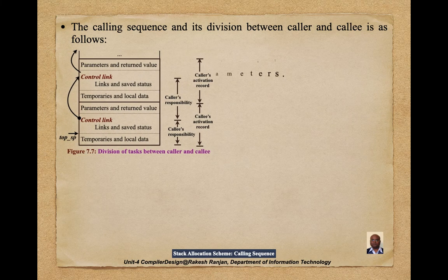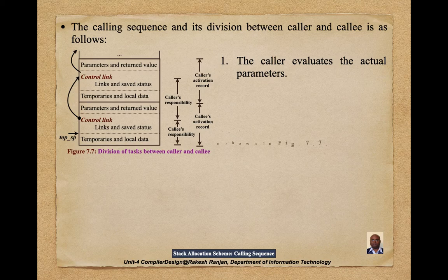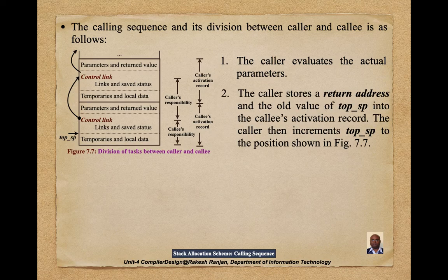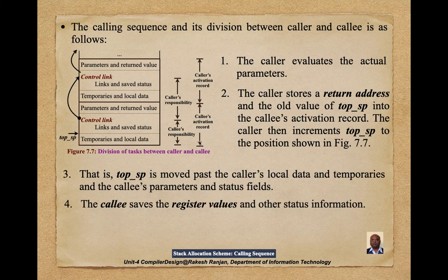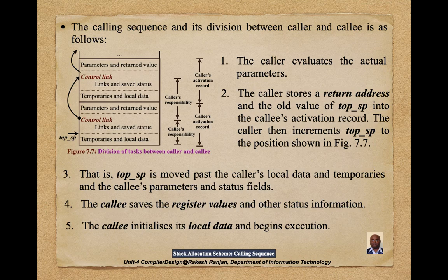The calling sequence and its division between caller and callee is as follows. First, the caller evaluates the actual parameters. Second, the caller stores the return address and old value of top_sp into the callee's activation record. The caller then increments top_sp past the caller's local data and temporaries, and the callee's parameter and status fields. The callee then saves register values and other status information, initializes its local data, and begins execution.